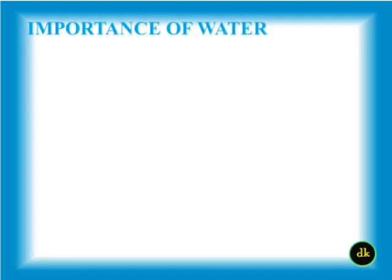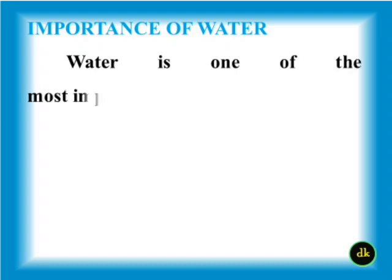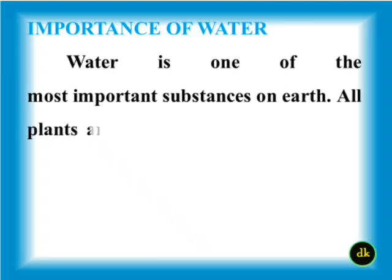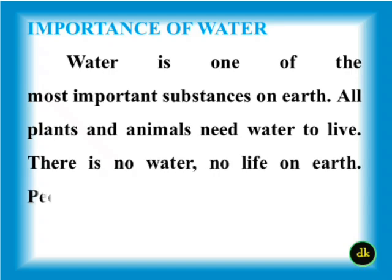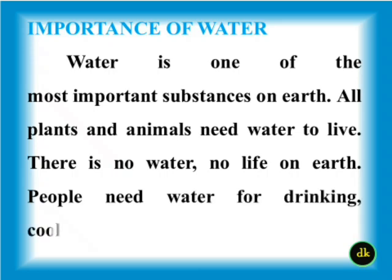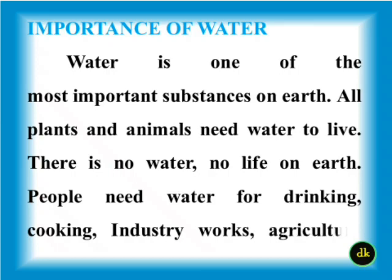Importance of water: Water is one of the most important substances on earth. All plants and animals need water to live. There is no life on earth without water. People need water for drinking, cooking, sanitation, agriculture, and more.